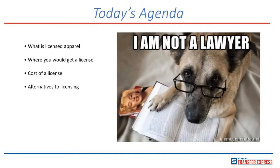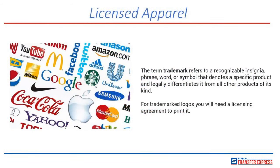The first thing we're going to discuss is: what is licensed apparel? The term trademark refers to a recognizable insignia, phrase, word, or symbol that denotes a specific product and legally differentiates it from all other products of its kind. Trademark logos are logos that belong to a company — the trademark essentially means this belongs to somebody specific and you cannot reprint it without their permission. Licensing is one form of permission you can obtain to reproduce a logo.